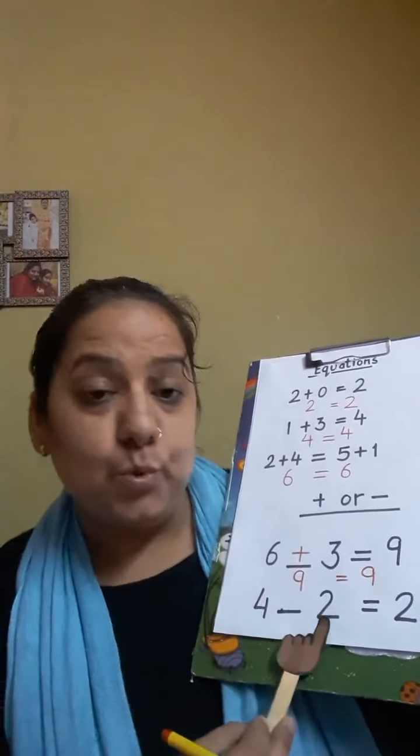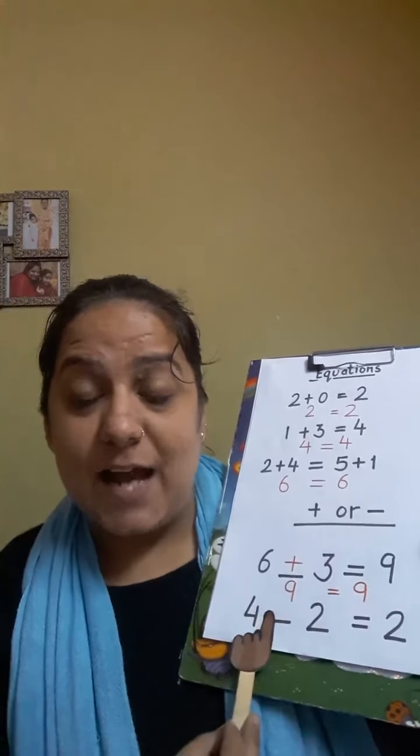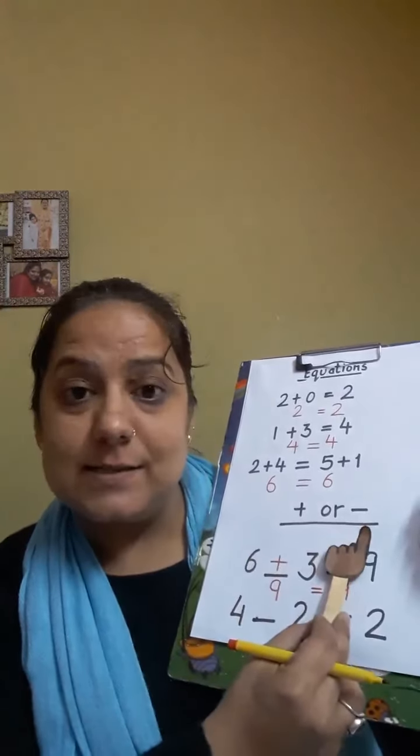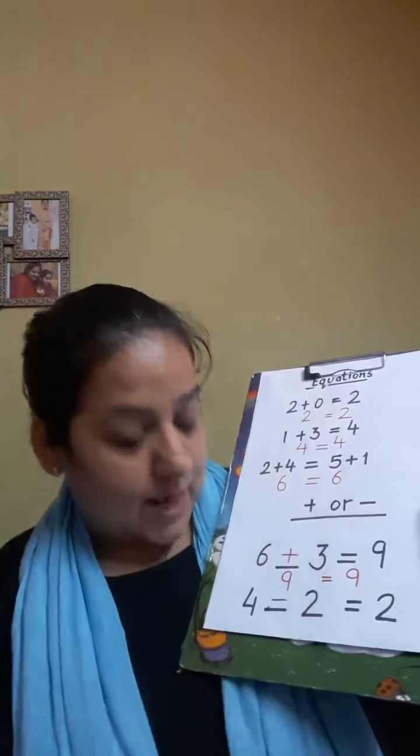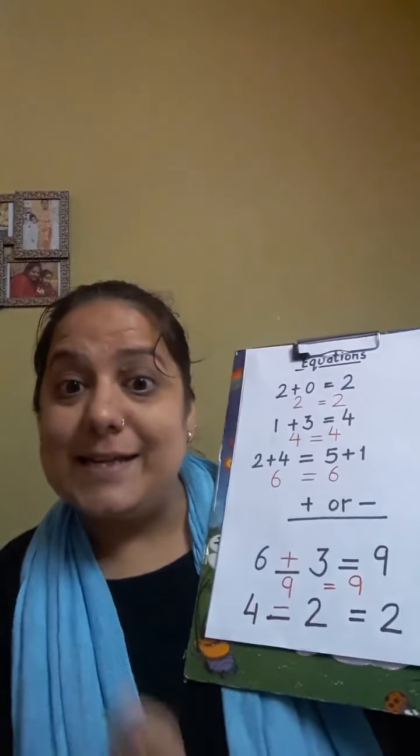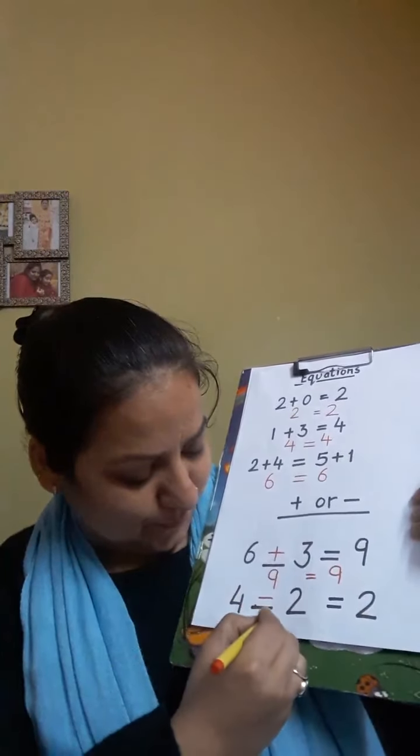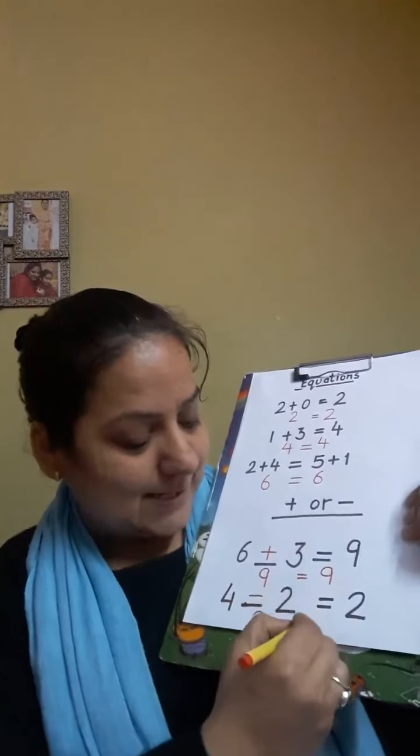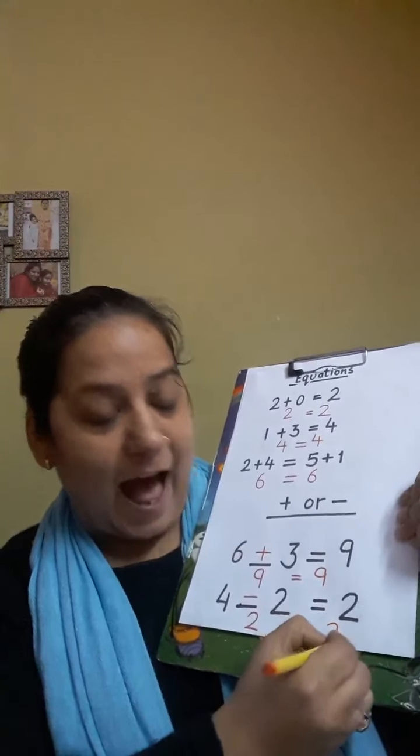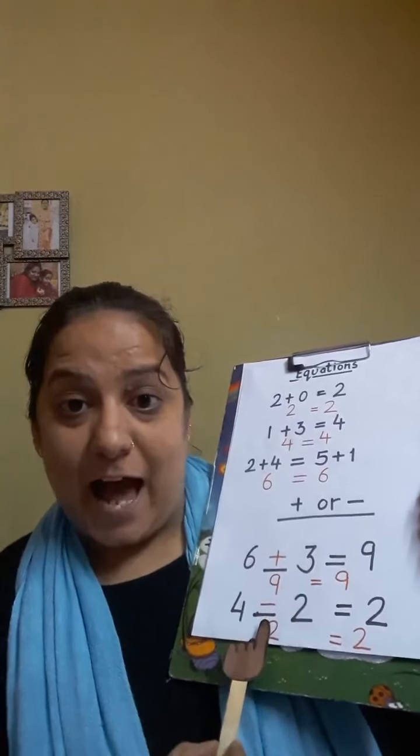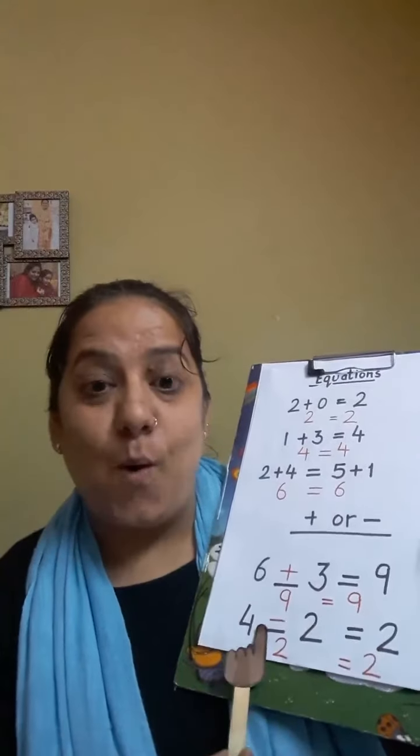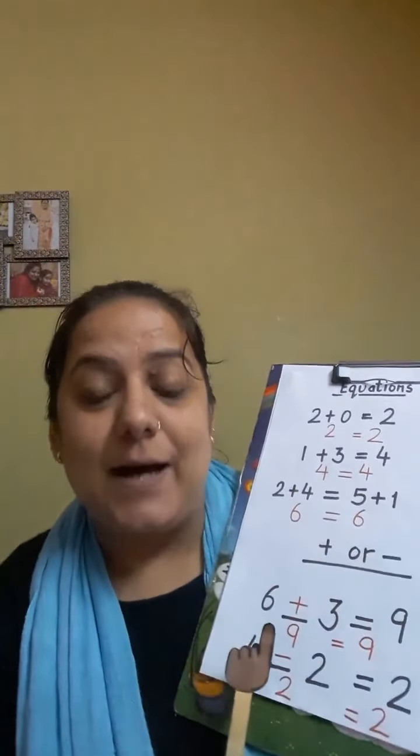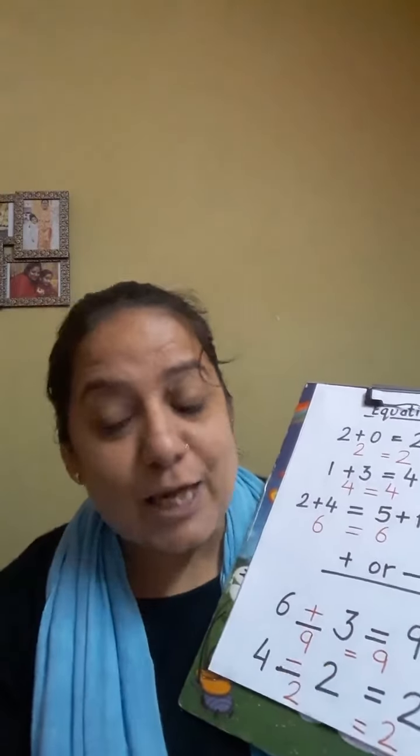4 dash 2 equals to 2. So which sign are we going to put in this? Plus or minus? Yes, you're right. We are going to put minus. So 4 minus 2 is 2. We get 2 after solving this. And here we already have 2. So we have both the sides equal. 2 and 2. So the equations help us to make both the sides equal. Thank you.